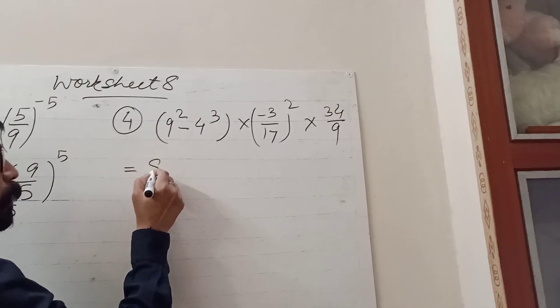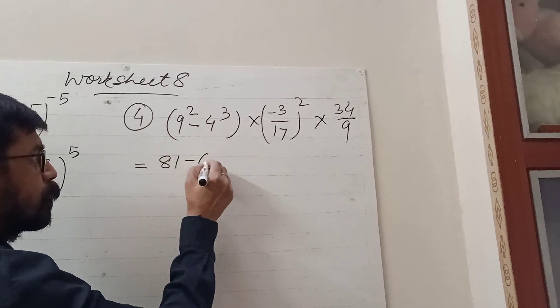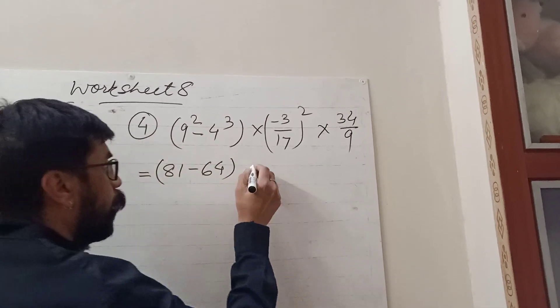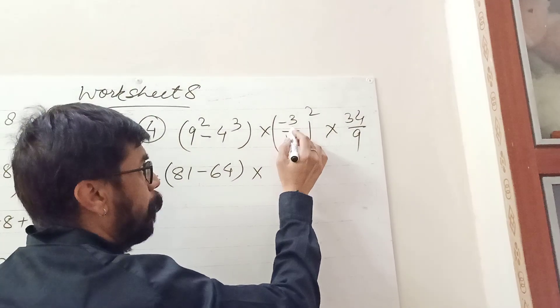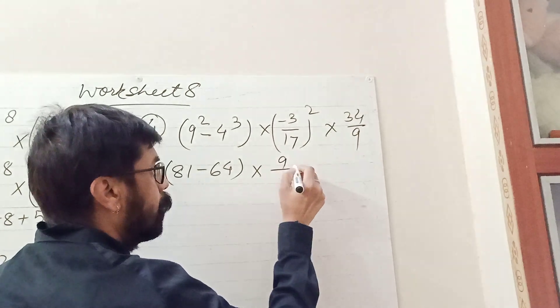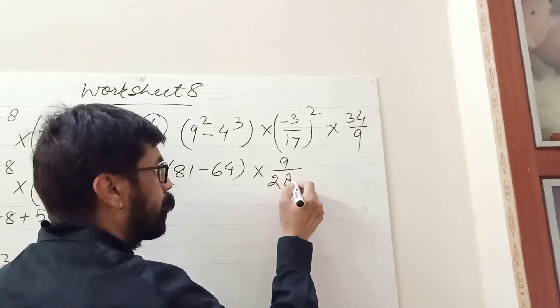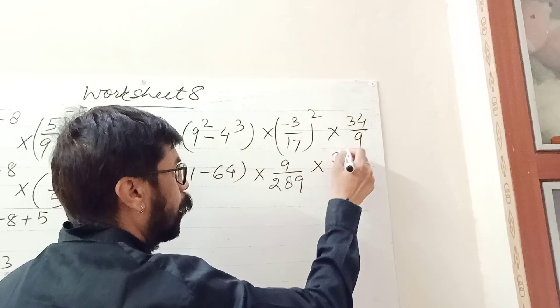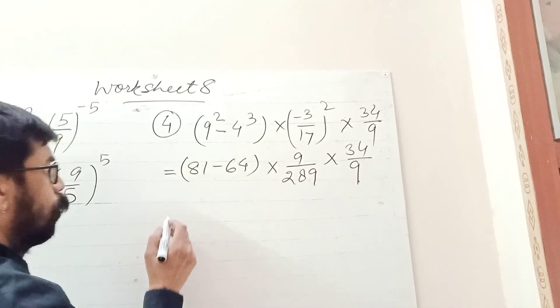9 square is 81, 4 cube is 64 into, this is minus 3 square is 9, 17 square is 289 into 34 upon 9. Now,